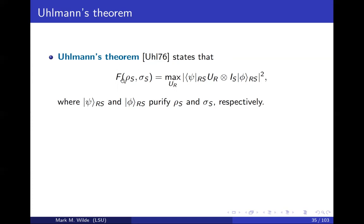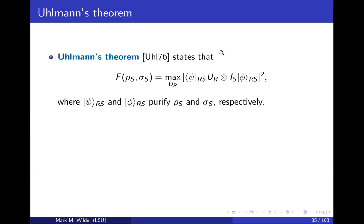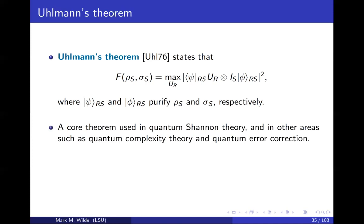It says that you can compute the fidelity. Previously said you use this formula, but another way is via this optimization problem. So you take a purification of rho, let's call it psi, a purification of sigma, let's call it phi, and then you compute the overlap between them in this larger dimensional Hilbert space. But now you optimize overall, overall unitaries acting on the reference system. That's another way you can compute the fidelity.